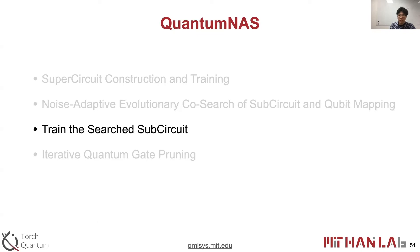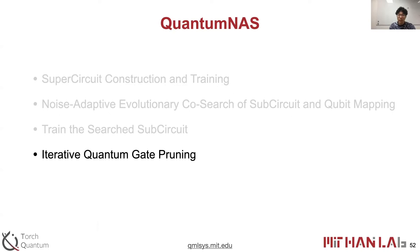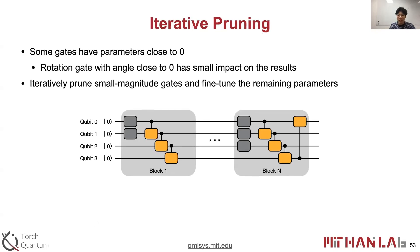We then train the sub-circuit from scratch, and further perform iterative quantum gate pruning on the trained sub-circuit. Specifically, since some gates contain parameters very close to zero, they have small impact on the results. Therefore, we iteratively prune small-magnitude gates and fine-tune the remaining gate parameters. Through fine-tuning, the noise-free accuracy can be recovered. Since fewer gates bring less noise, the measured accuracy on real quantum devices can be improved.